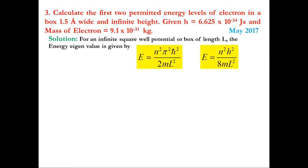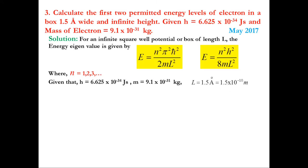Note that n can take values 1, 2, 3, 4, 5, etc. — n cannot equal 0. Given: h = 6.625×10⁻³⁴ J·s, m = 9.1×10⁻³¹ kg (electron), and L = 1.5 angstrom = 1.5×10⁻¹⁰ m. We need the first two permitted energy levels, corresponding to n = 1 and n = 2.